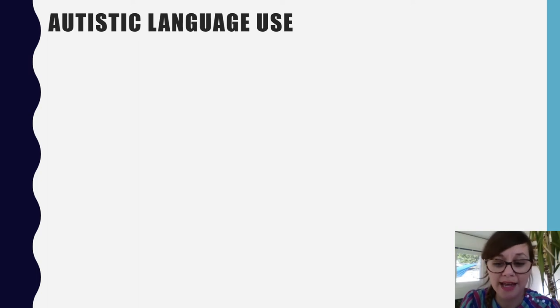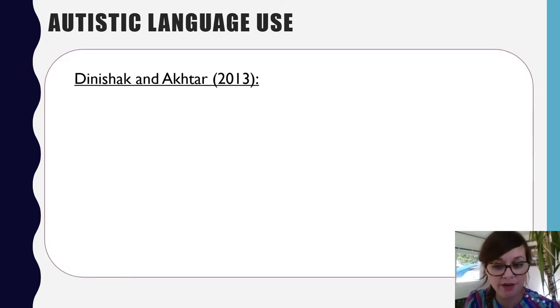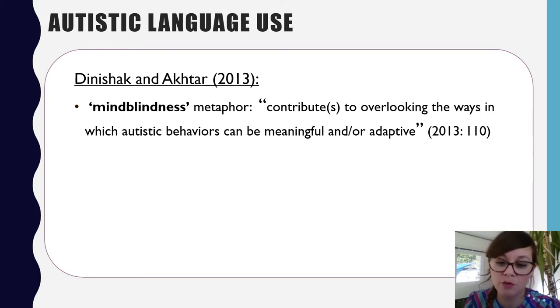So coming to autistic language use, Dinishak and Akhtar in 2013 argued that mind blindness as a metaphor, originally coined by Simon Baron-Cohen, not only obscures the fact that both parties contribute to the social and communicative difficulties between them, in the same line as the double empathy problem, but it also contributes to overlooking the ways in which autistic behaviors can be meaningful and/or adaptive. So the prevailing notion that autistic people lack theory of mind can lead neurotypical interlocutors to assume a lack of meaning in the behavior and utterances of these individuals and simply overlook it.